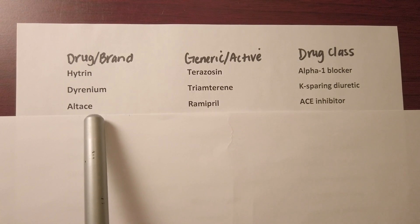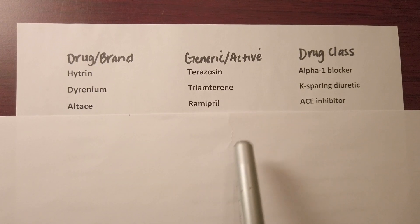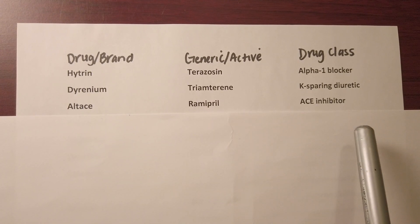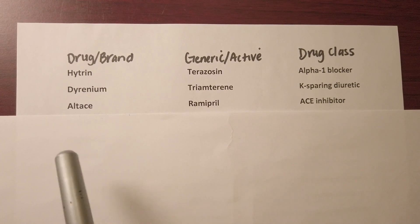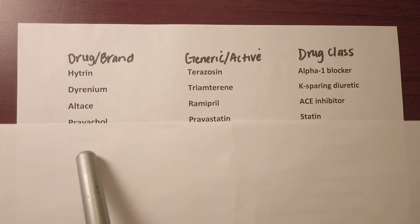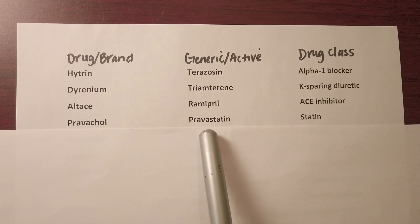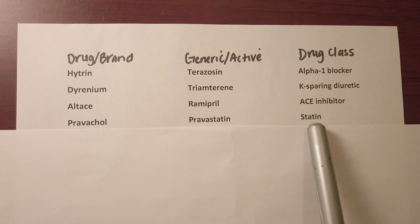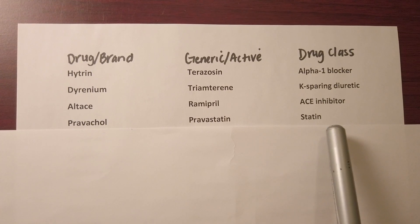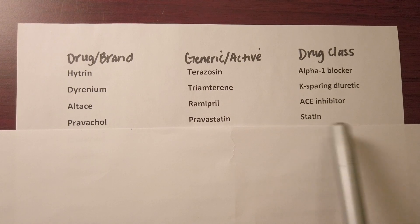Next we have Altace, generic name ramipril, and it's an ACE inhibitor used for high blood pressure. We have Pravachol, generic name pravastatin, and it's a statin — an antihyperlipidemic used for high cholesterol.